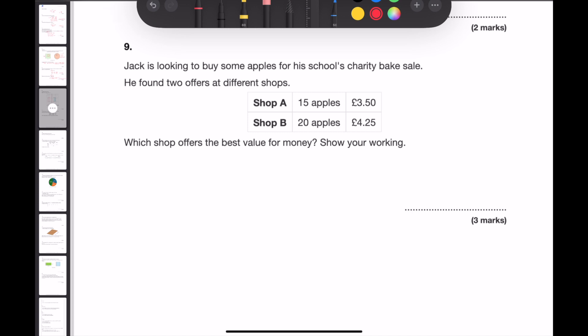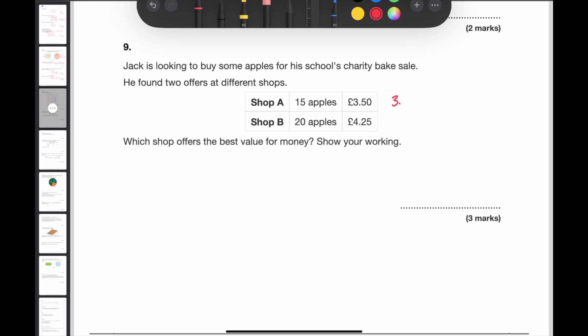Question 9. Jack is looking to buy some apples for his school's charity bake sale. He found 2 offers at different shops. Shop A has 15 apples at £3.50. Shop B has 20 apples at £4.25. Which shop offers the best value for money? Show your working. In order to be able to determine which shop is the best value, I need to calculate the cost of one apple in each shop. To do this, take the cost and divide it by how many apples there are. So £3.50 divided by 15 means that each apple in shop A is 0.233 recurring.